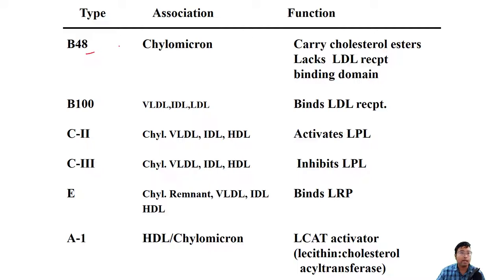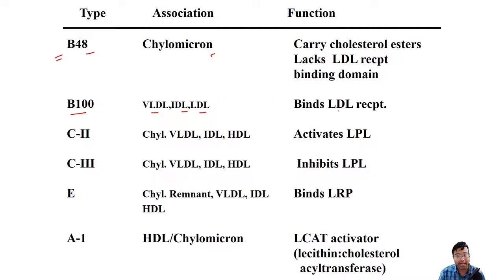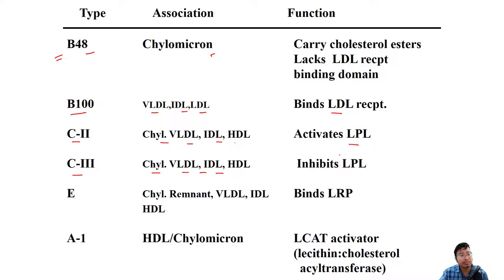Here is a revision of the previous class covering apoproteins, the lipoprotein particles they are associated with, and their essential functions. For MCQ purposes: chylomicron contains ApoB48; B100-containing lipoproteins are VLDL, IDL, and LDL, which act as ligands to bind LDL receptors in the liver. Lipoproteins containing ApoC2 are chylomicron, VLDL, IDL, and HDL; ApoC3 contains the same. ApoC2 activates lipoprotein lipase and ApoC3 inhibits it, so both can activate or inhibit LPL depending on whether we are in a fasting or fed state.